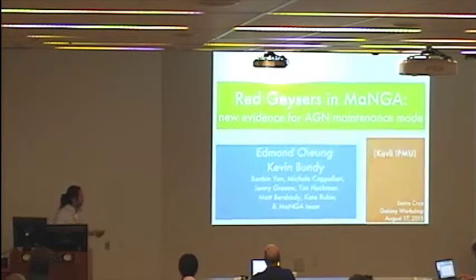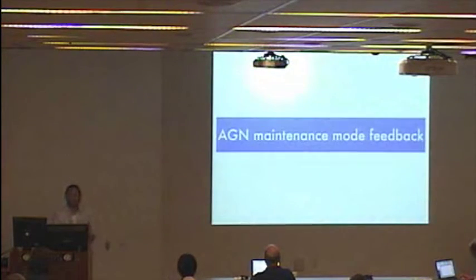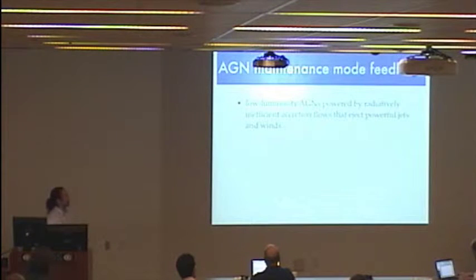But first, what is AGN maintenance mode feedback, and why do we need it? Well, AGN maintenance mode feedback is from low-luminosity AGNs, powered by radiatively inefficient accretion flows. And why we need it is because this feedback, in the form of ejected jets and winds, interact with the surrounding gas within quiescent galaxies, which ultimately prevents star formation and maintains quiescence.